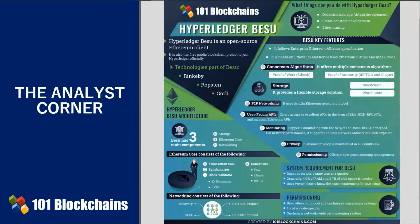Hyperledger Besu is the first public blockchain to join the ranks of the Hyperledger project, where only permissioned blockchains were part of it until now. Hyperledger Besu is an open-source Ethereum client that makes use of the Ethereum public network.